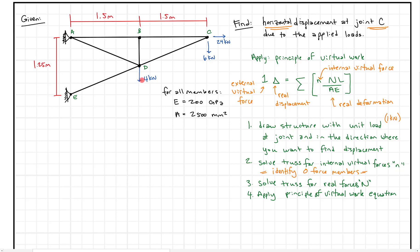We have more loads here — a four kilonewton load, a six kilonewton load, a 24 kilonewton load. To solve this truss looks kind of intimidating, but to apply the principle of virtual work, we're going to draw the structure with the unit load, solve for the internal virtual forces, and identify all the zero force members, because that's going to simplify our calculations a lot.